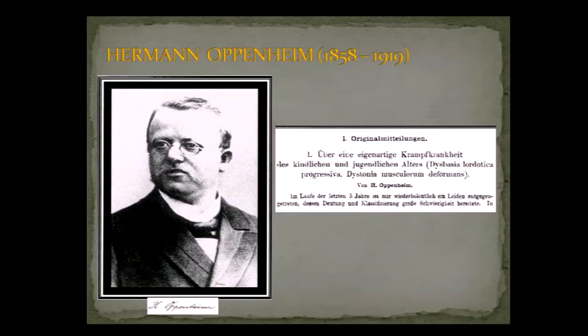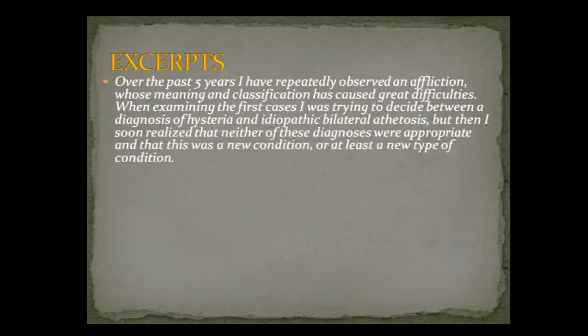I want to start with Dr. Herman Oppenheim. He was a very well-known, eminent neurologist from Germany. He wrote a textbook of neurology which by his time already had six editions and described many neurological conditions. His name is very peculiar in terms of dystonia because he was the one to coin the term. This is the original article he wrote in 1911 in Germany, and there is an English translation done.